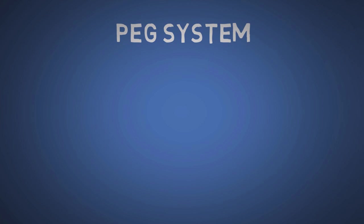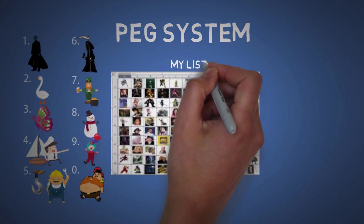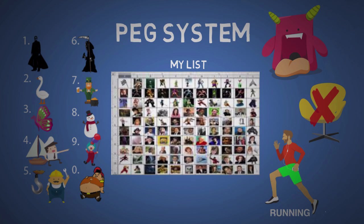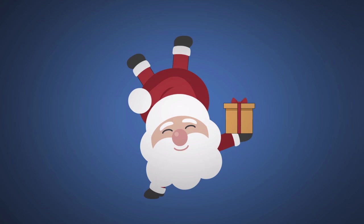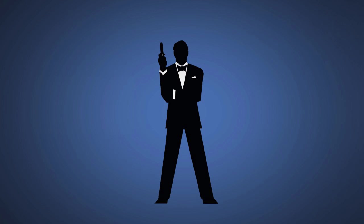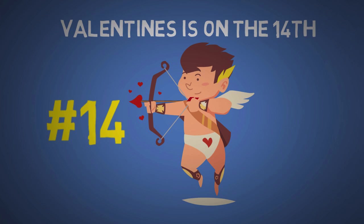For every single digit from 0 to 9 and double digits from 00 to 99, we're going to associate with a noun. Now from experience, I suggest you use some living character or creature rather than an object. Then on top of that, give each noun a unique action or verb. For example, Santa Claus can be your number 25 because Christmas is on the 25th and his action could be giving a gift. James Bond can be 07 because he's 007 and his action is holding a gun. 14 can be Cupid because Valentine's on the 14th and his action can be shooting an arrow.